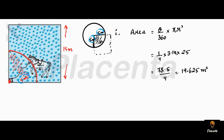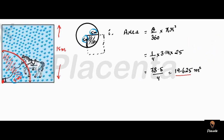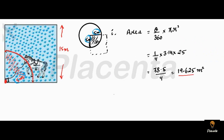Increase means: from the new total area we subtract the previous area, and that difference is the increase. For example, if you have 10 rupees and later you have 15 rupees, the increase is 5 rupees — you subtract the previous amount from the new amount. Similarly, we will first calculate the new area using radius = 10 meters, then subtract the previous area.